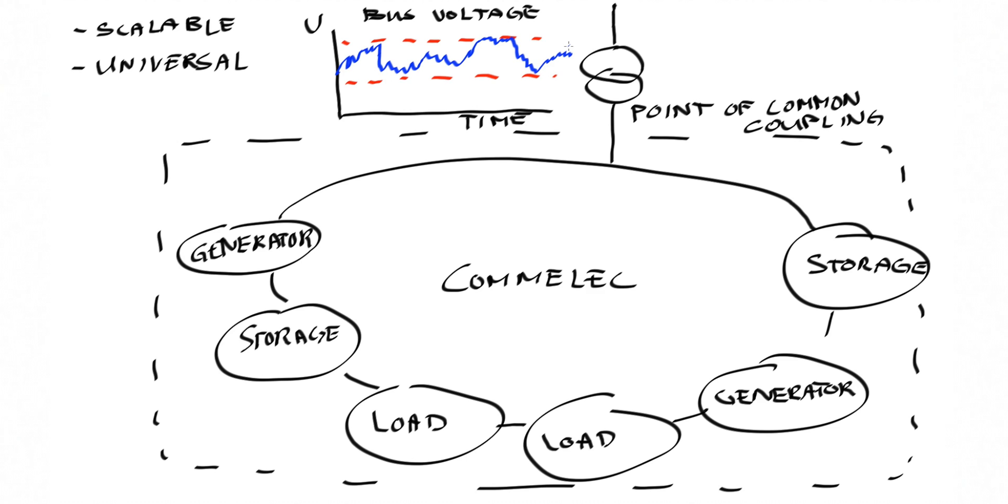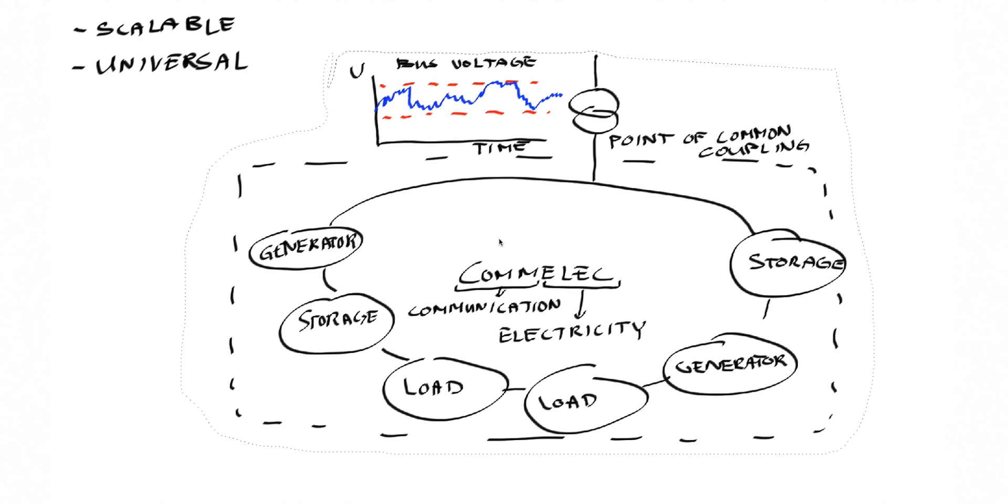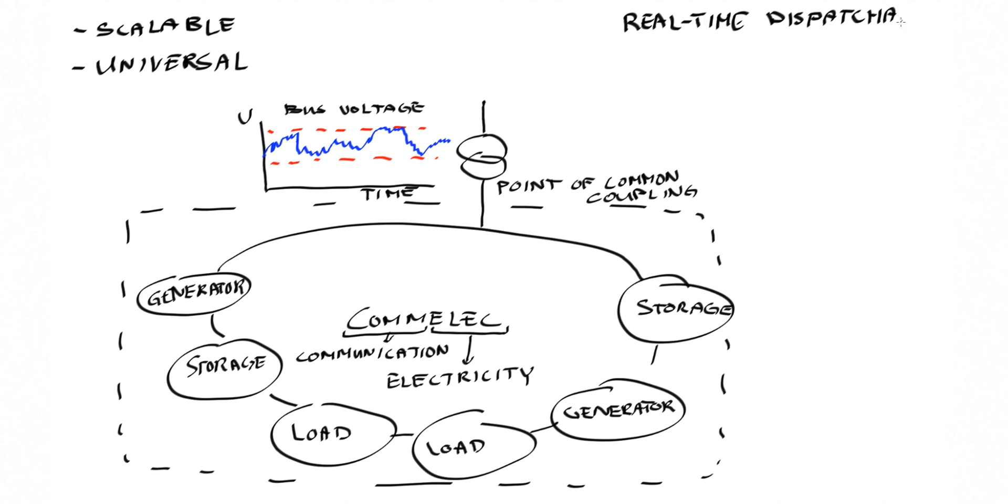Hence, voltage and line current violations are avoided by construction. The framework has several benefits. COMALAG computes optimal control decisions, where the optimization criterion can be influenced by individual resources. It can accurately track a target power profile at the point of common coupling of the grid, which means that a COMALAG-controlled subgrid can operate as a virtual power plant and can be used instead of conventional fuel-based generators to maintain power balance.